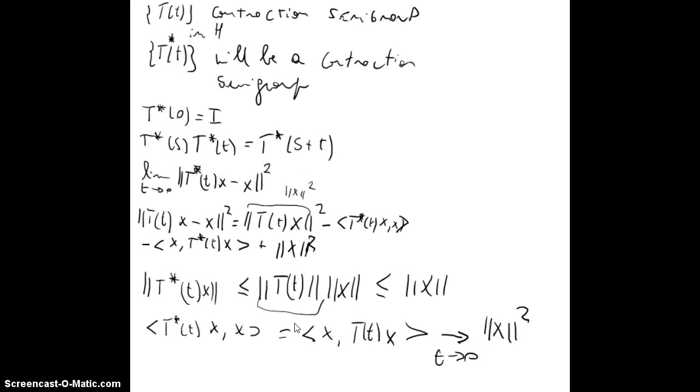Now, note that ||T*(t)T(t)x|| is less than equal than ||T(t)|| times ||x||, and this is less than equal than ||x||. Recall that T(t) is a contraction semigroup, so we can make this bound. With this we know that we can bound this term by ||x||². So we will have 2 times ||x||², but what happened with these two negative terms? The thing is that <T*(t)x, x>, which is equal to <x, T(t)x>, this converges to ||x||² as t goes to 0.